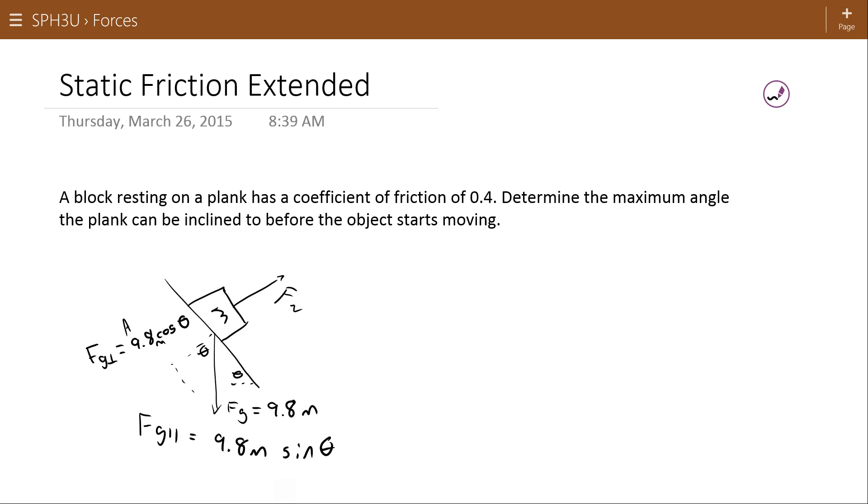Now as discussed in the incline plane video, this section of the force of gravity and this normal force are the two that cancel out and have no effect on the motion. But what that means is that our normal force has a value of 9.8m cos theta.